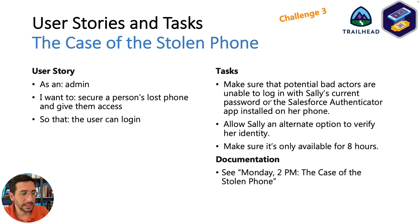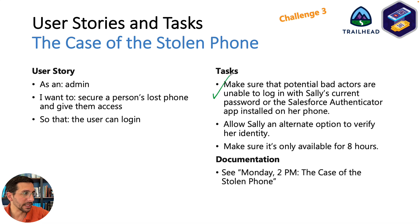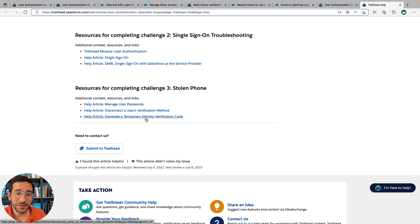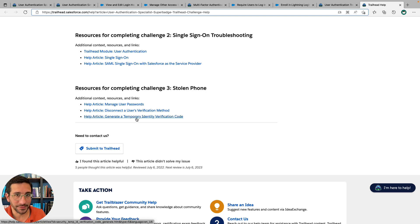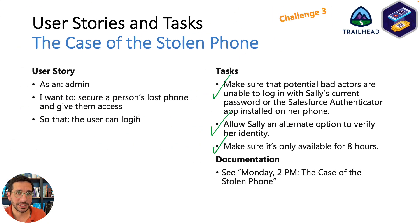Challenge three is the case of the stolen phone. As an admin, you want to secure a person's lost phone and give them access so the user can log in. Make sure potential bad actors are unable to log in with Sally's current password. You're going to allow Sally an alternate option to verify, and make sure it only lasts for eight hours. I found three articles exceedingly helpful to complete this last challenge: manage user passwords, disconnect a user's verification method, and generate a temporary identity verification code. Those are linked in the description below.